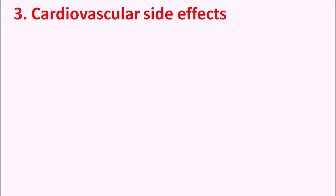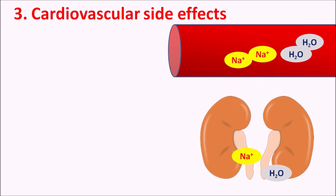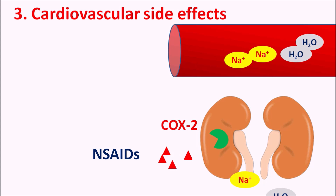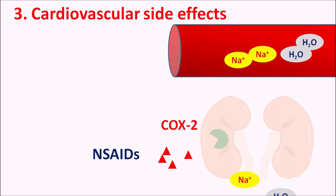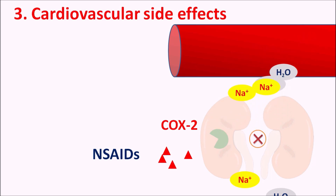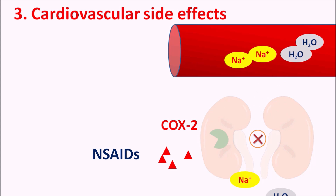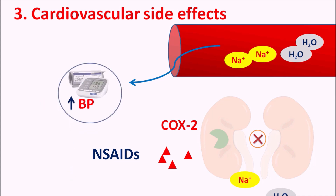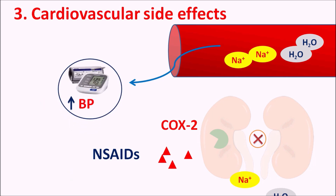The third side effect is cardiovascular effects. Normally sodium and water are excreted by the renal system. However, renal cells highly express the COX-2 enzyme, which acts as a somewhat constitutive enzyme here. NSAIDs inhibit this COX-2 enzyme activity, thereby inhibiting the filtration rate, so sodium and water are not excreted. Sodium and water levels become elevated in the blood, increasing blood volume and thereby increasing blood pressure. One important cardiovascular effect of NSAIDs is thus increasing blood pressure, worsening hypertensive states in patients.